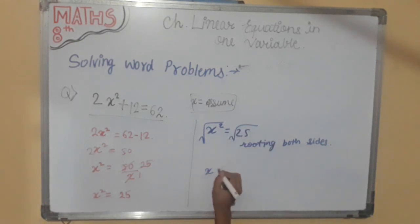It will remain x and 25 will become 5. Therefore the positive square number is 5. I hope you have understood this.